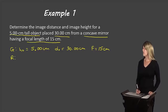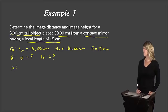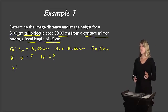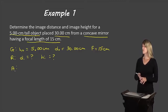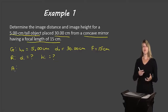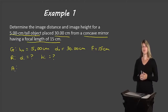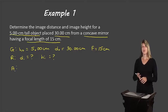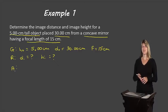What is required? We need to find the image distance DI and the image height HI. To solve this problem, we have information about heights, distances, and focal length. If we tried using the magnification equation, we don't have enough information. However, with DO and F, we can find DI using the mirror equation.